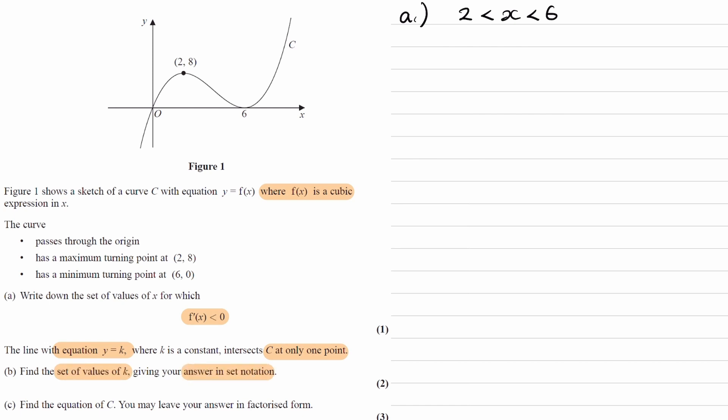Okay, so first of all, our equation y is equal to k would just be a horizontal line. And we're trying to see what is the range of k values for which this horizontal line crosses our curve at only one point.